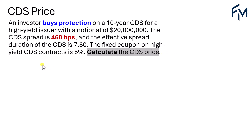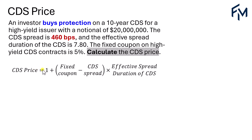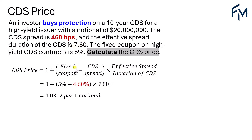We'll use the formula: 1 plus the fixed coupon minus the CDS spread, and the difference will be multiplied by the effective spread duration of the CDS. Substituting the numbers in — fixed coupon is 5%, CDS spread is 4.6%, and effective spread duration is 7.8 — we get 1.0312 per one unit notional.